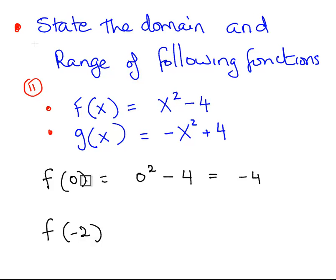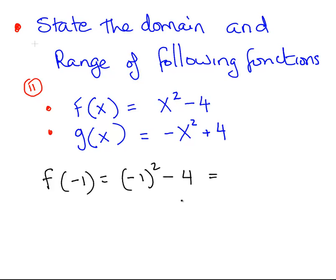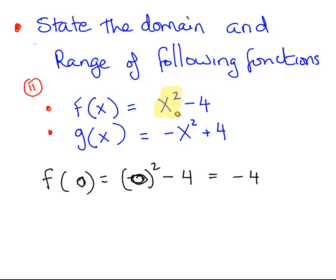Can we get a number lower than minus 4? Let's try minus 1. f of minus 1 is minus 1 squared minus 4, which equals 1 minus 4, which is minus 3. So f of 0 gives us minus 4 — we actually cannot get an output less than minus 4 for this function. Because no matter what input we put in, x squared will always give us a number between 0 and infinity. When we bring in that minus 4, we can get as low as minus 4, but the upper bound is infinity.